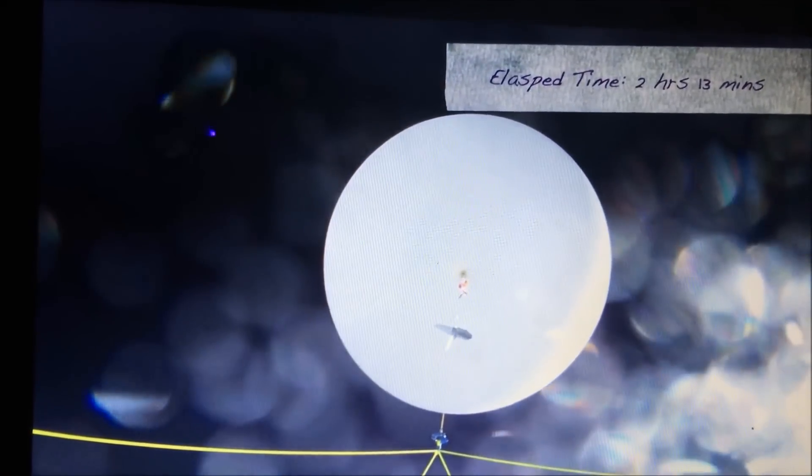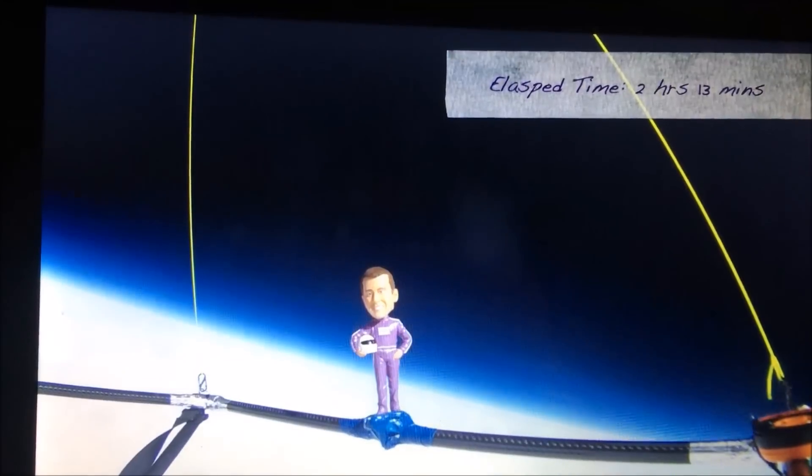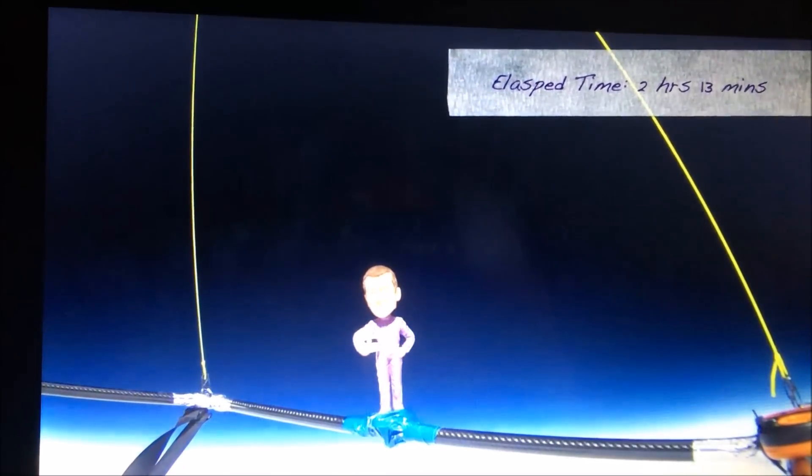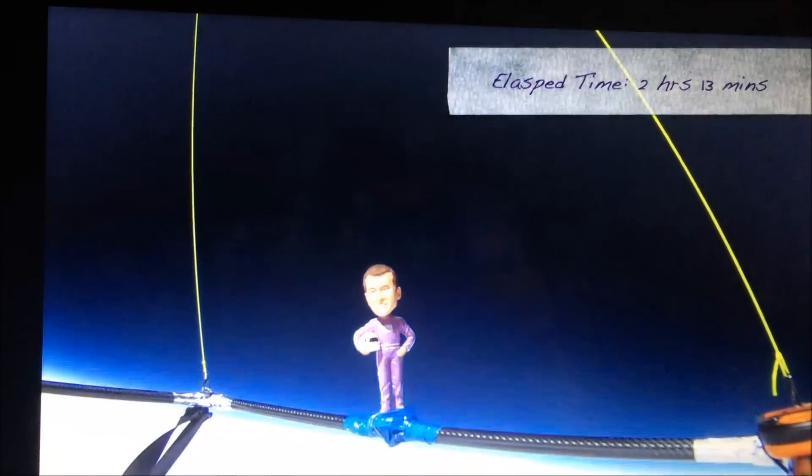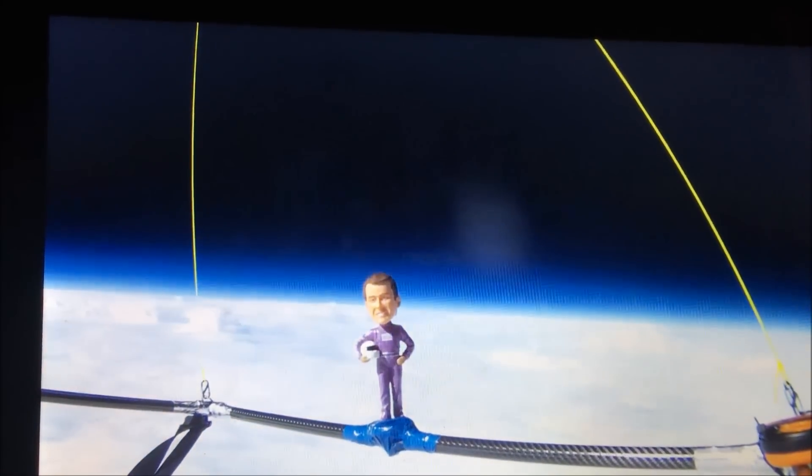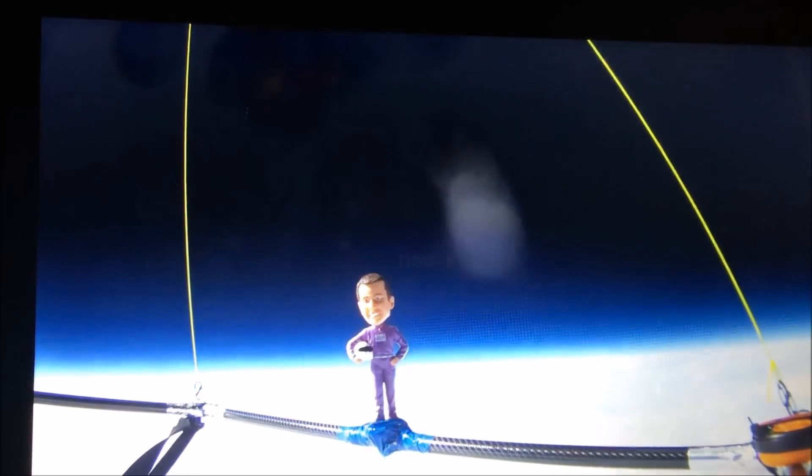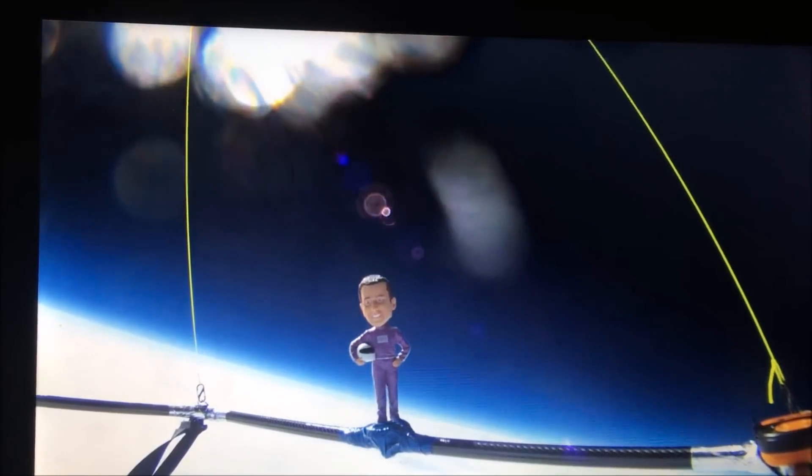Neil deGrasse Tyson said the earth is pear-shaped. Well then how come none of the pictures from NASA are pear-shaped earths? He could rebuttal and say they are CGI images and it's just easier to make it look like a circle.